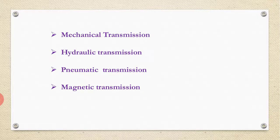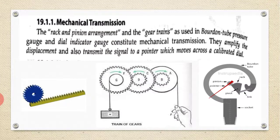Today I am going to discuss these transmissions. The first one is mechanical transmission. The rack and pinion arrangement and gear trains are used as transmitters. The Bourdon tube is also used — when liquid flows under some pressure, the pivoted pointer moves over the graduated scale. These mechanisms amplify the displacement and transmit the signal to a pointer which moves across a calibrated dial.